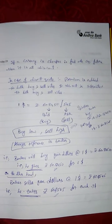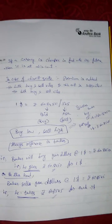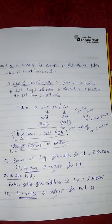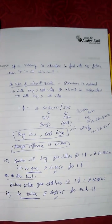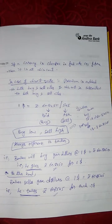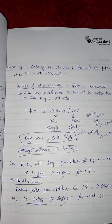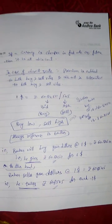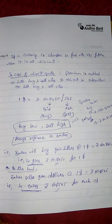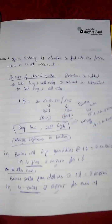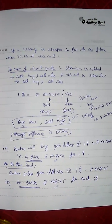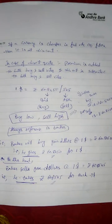Depending upon the forward rate, we can say the currency is at premium or discount. If a currency is cheaper in the forward market — that is, the value of the currency is cheaper three months later than today — then we say that currency is at discount. Vice versa, if the currency is costlier in the forward market in say the next three months, then we say that currency is at premium.